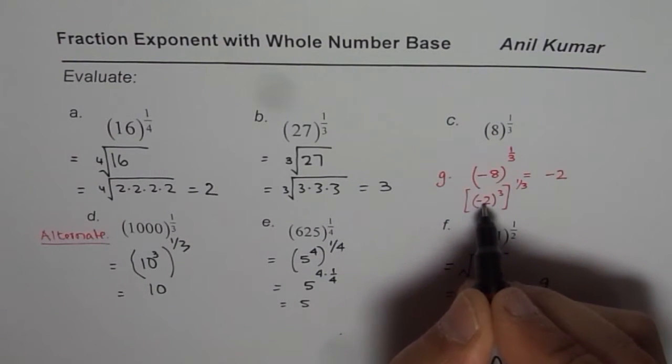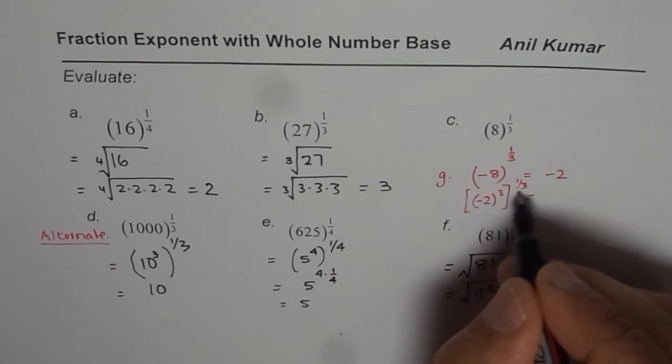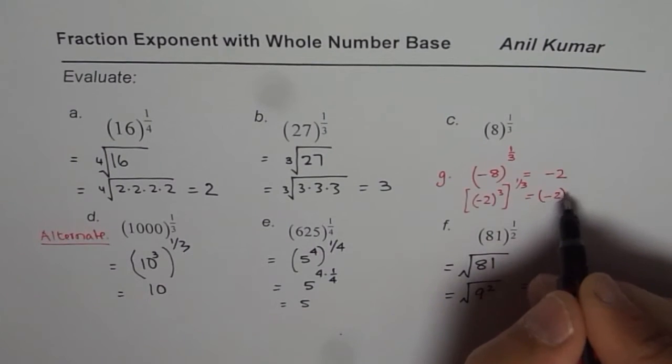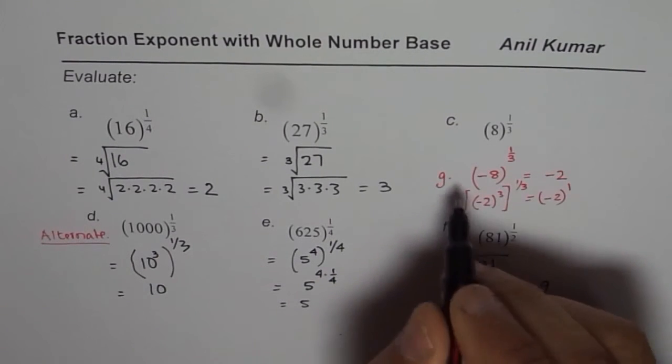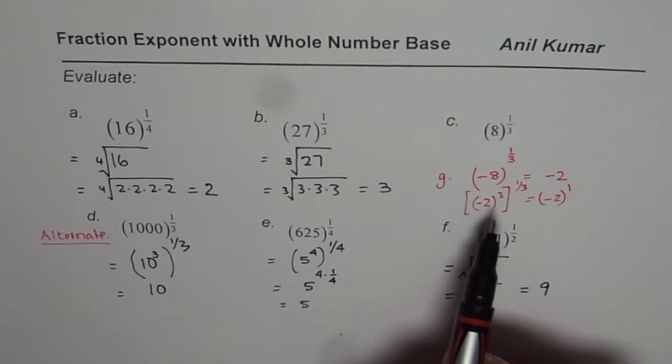Minus 2 times minus 2 times minus 2 is minus 8. So, that will give you minus 2 to the power of 1, which is minus 2. So, these are different ways of looking into it. So, anyway, minus, if the number is inside negative number, then cube roots will result into negative answers.